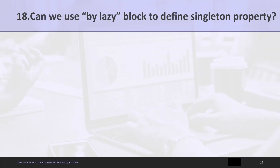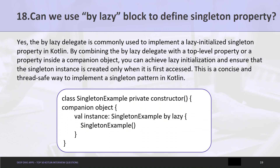Question 18: Can we use the by lazy block to define a singleton property? Yes, the by lazy delegate is commonly used to implement a lazily initialized singleton property in Kotlin. By combining the by lazy delegate with a top-level property or a property inside a companion object, you can achieve lazy initialization and ensure the singleton instance is created only when it is first accessed. This is a concise and thread-safe way to implement the singleton pattern in Kotlin.